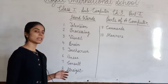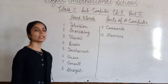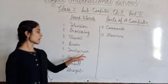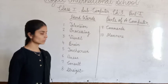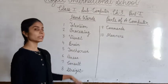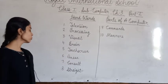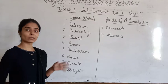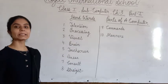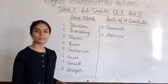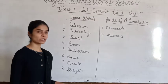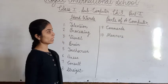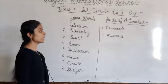Next: B-R-A-I-N, brain. Next: T-O-U-C-H, touch; S-C-R-E-E-N, screen — touch screen. Next: Q-U-E-U-E — queue means a line. Next: C-O-N-S-U-L-T, consult. Next: S-T-R-A-I-G-H-T, straight. Next: C-O-M-M-A-N-D-S, commands. Next: M-A-N-N-E-R-S, manners.